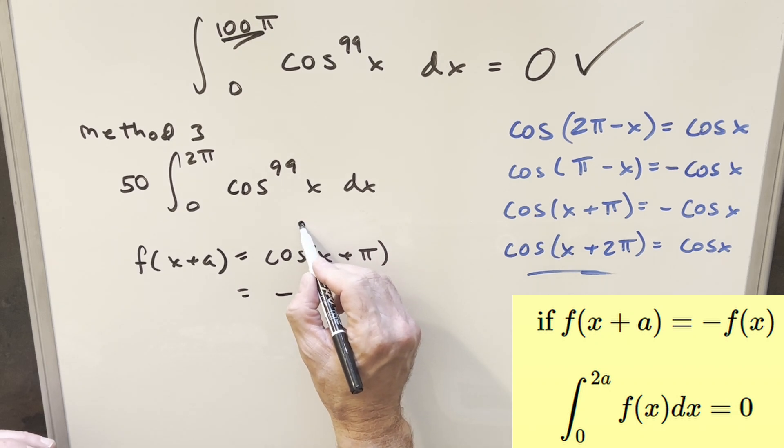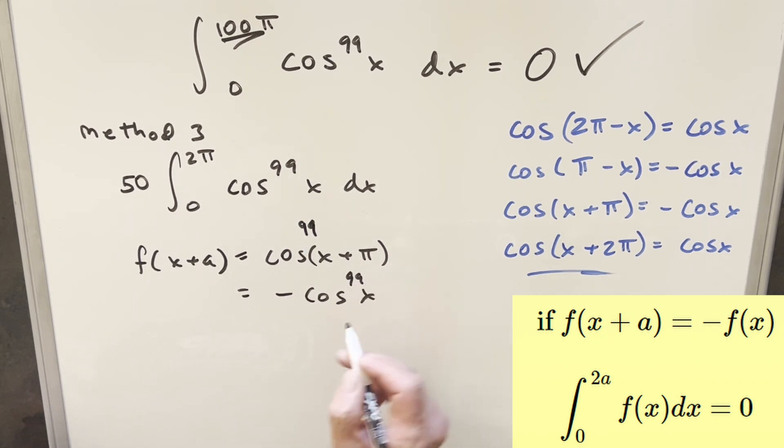But really in our function, everything's to the 99th power. So raise this to the 99th, raise this to the 99th. The minus stays again because it's an odd power. And so this again is going to be minus f of x.